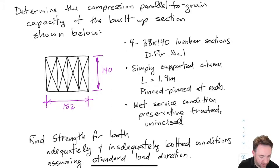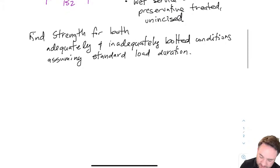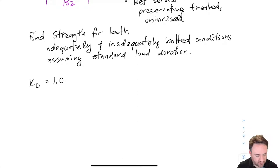The first thing we're going to do is determine all of our modification factors and strengths, which come from the tables in the standard. It already says here we are assuming a standard load duration, so kd equals 1.0. In real life we would have multiple different load combinations and would calculate multiple different strengths, one for each associated load duration factor.